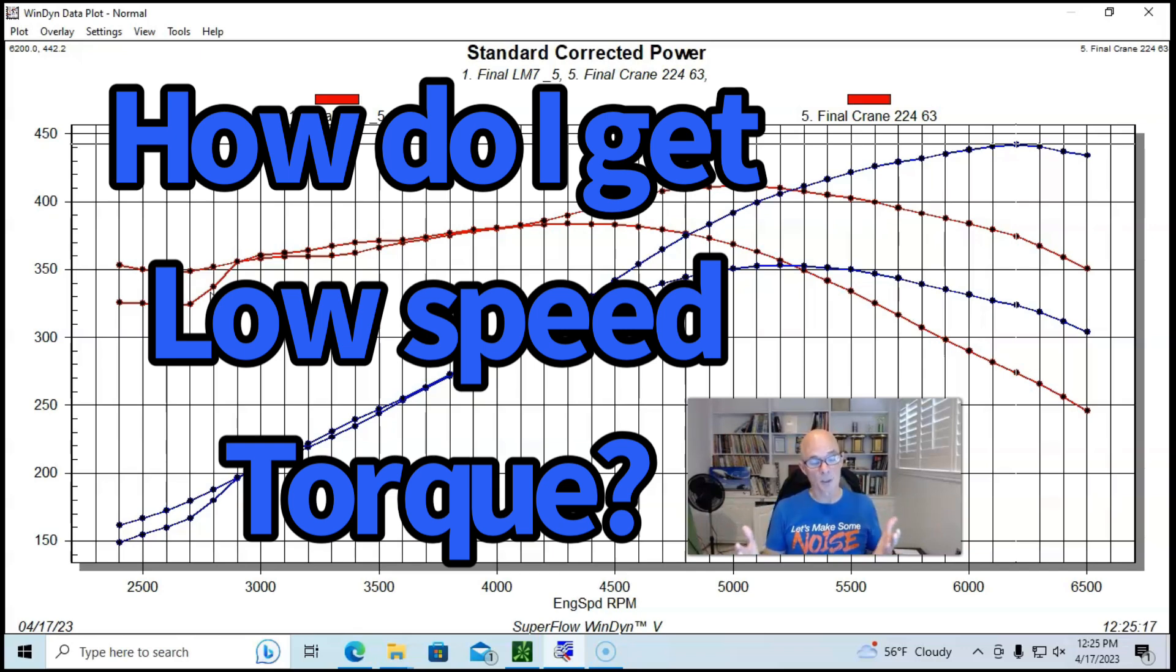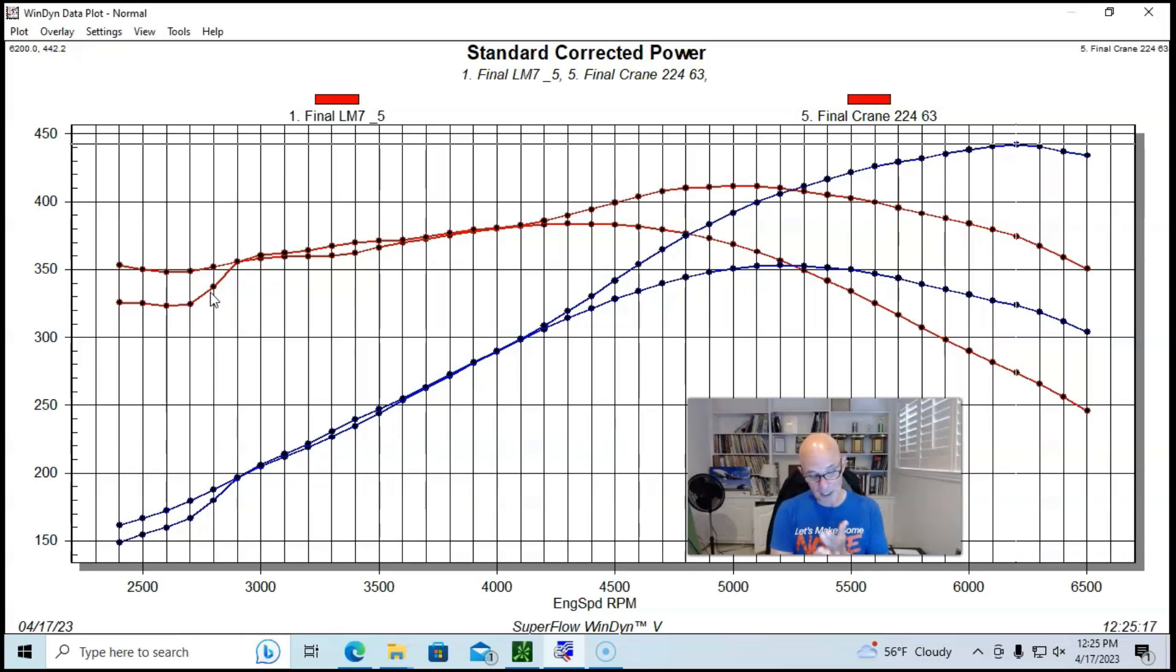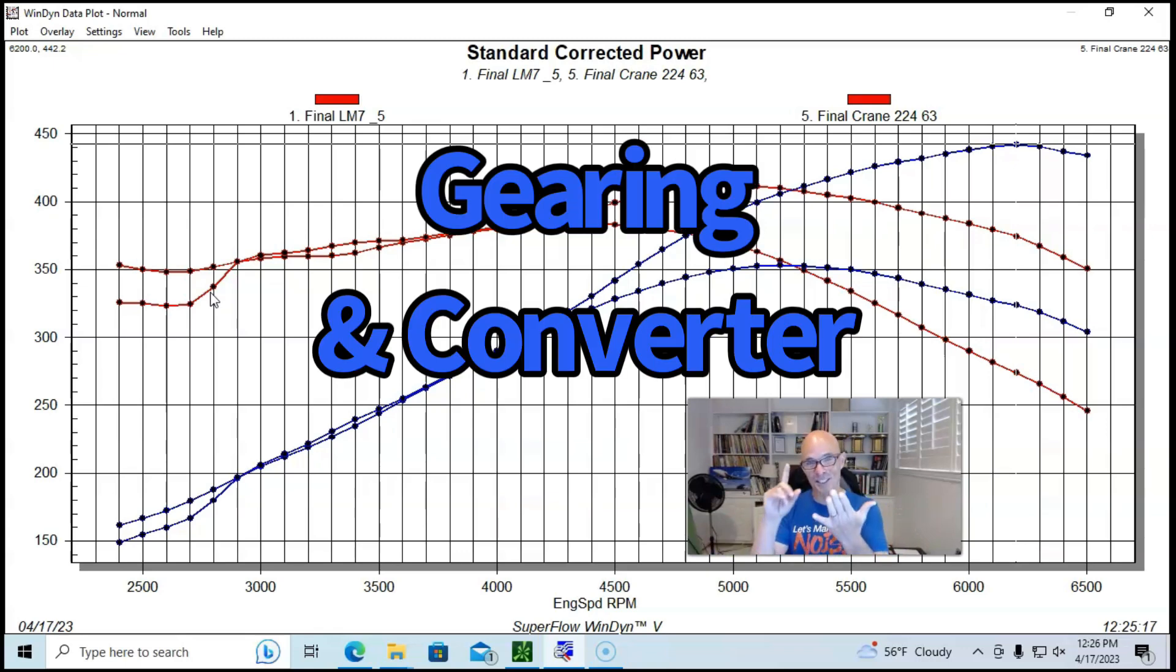The idle quality would not be nearly as good. It would definitely require a converter, which is the answer to this question. If you want to put a camshaft in where you gain low speed power, the answer is not to try to find a camshaft that doesn't exist. You're never going to get 50 or 60 foot-pounds of torque down low from any camshaft. The way that you get it is to change the gearing or change the stall speed on the converter.